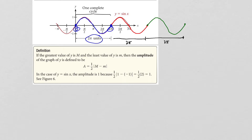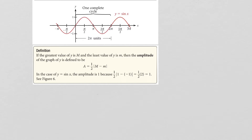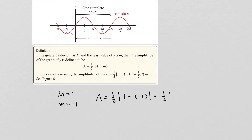Now let's talk about the amplitude of a function. If the greatest value of y is capital M and the least value is lowercase m, then the amplitude is defined as: A = (1/2)|M − m|. In the case of y equals sine of x, the amplitude is 1, because the maximum value is positive 1 and the minimum is negative 1. So the amplitude is (1/2)|1 − (−1)| = (1/2)(2) = 1.